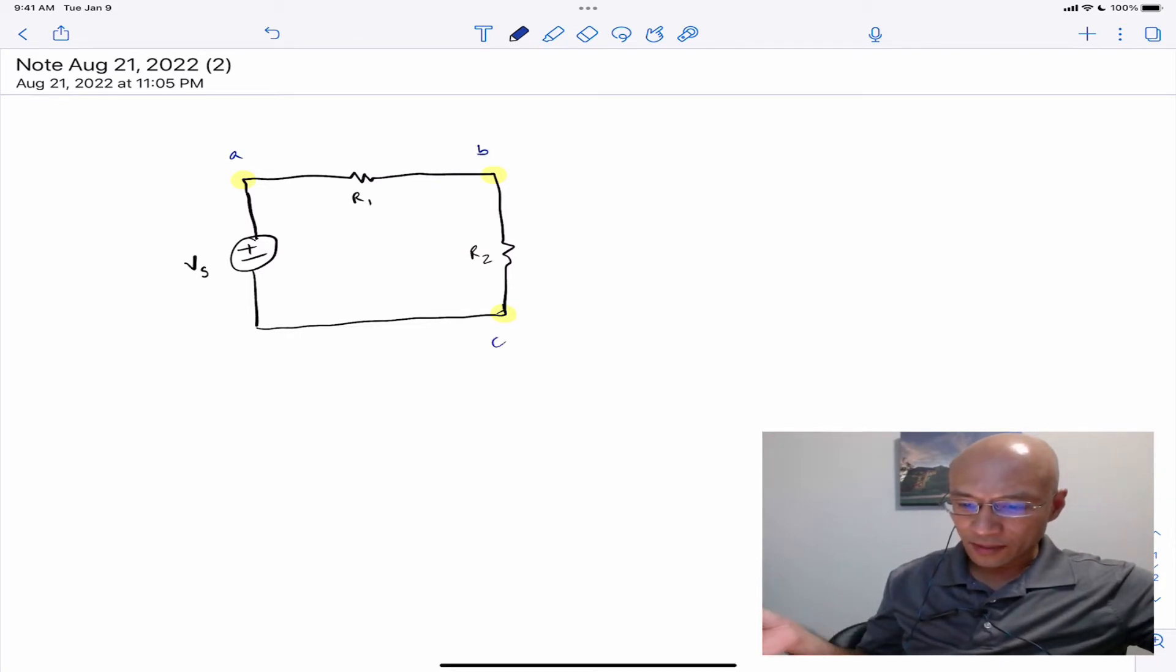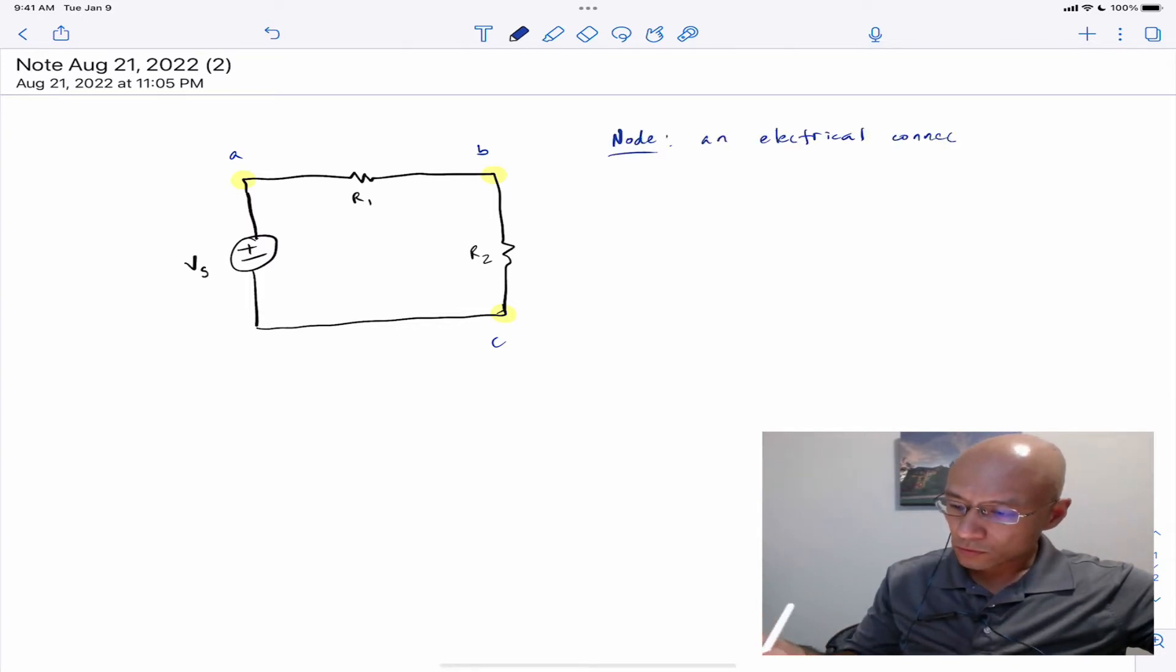Well, that's correct, but it's better to identify the nodes as the electrical connection between elements. So let's just write that out. So a better understanding of node A is not that it was just that one point, but rather all this entire wire, and then node B is all of this, and node C is all of that.